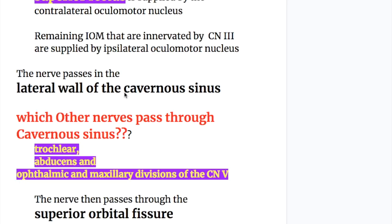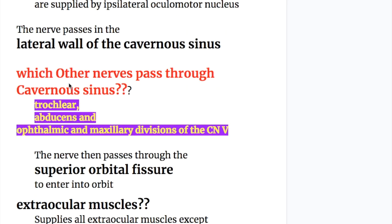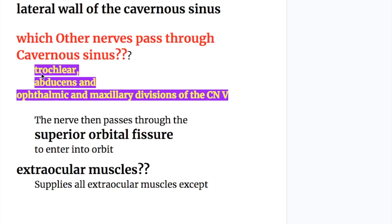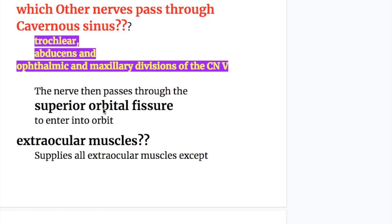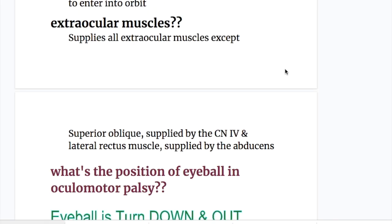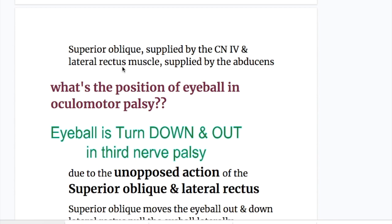The nerve passes in the lateral wall of the cavernous sinus. Which other nerves pass through the cavernous sinus? Cranial nerve four (trochlear), sixth (abducent), and the ophthalmic and maxillary divisions of the trigeminal nerve. The nerve then passes through the superior orbital fissure to enter into the orbit. The oculomotor nerve supplies all extraocular muscles except the superior oblique, which is supplied by the trochlear nerve (CN4), and the lateral rectus, which is supplied by the abducent nerve.